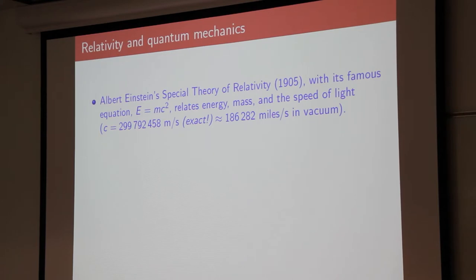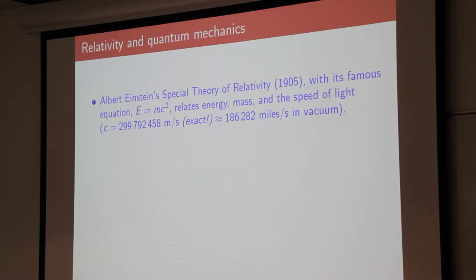I'm going to take three areas of basic science — relativity, quantum mechanics, and cryptography — and show how they've had an impact on modern society. Even though if you presented them individually to the average citizen and asked, 'Does this have any impact in your life?' they'd say, 'Of course not. Can't possibly.'